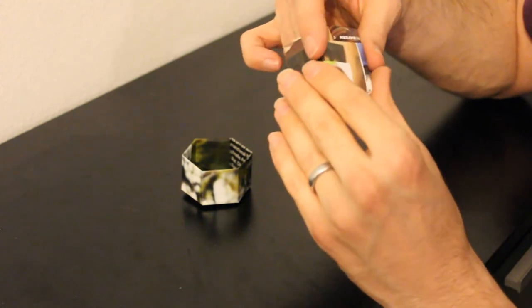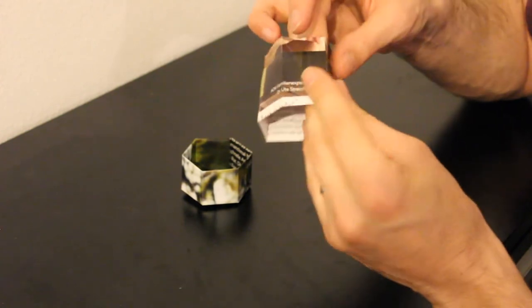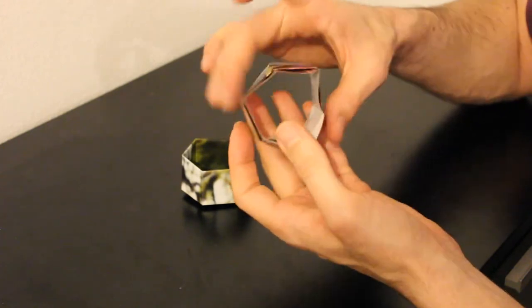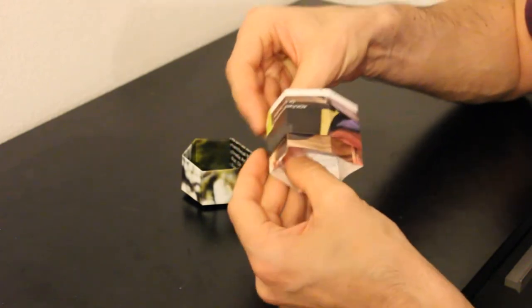There we go. So now we have a hexagonal shape, and what remains now is to push the base panels down so that each one interlocks with the next one.